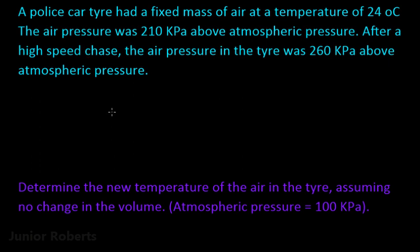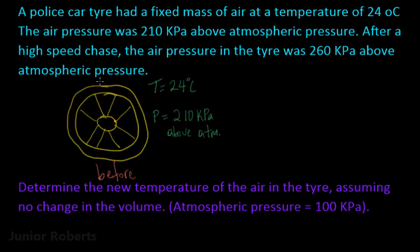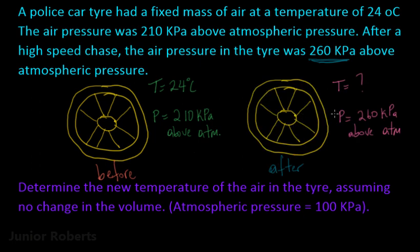Before solving, let's make a sketch. Before the high-speed chase: the tire has air at 24 degrees Celsius and 210 kilopascals above atmospheric pressure. After the high-speed chase, the pressure rose to 260 kilopascals above atmospheric pressure, and our objective is to find the new temperature of the air in the tire.